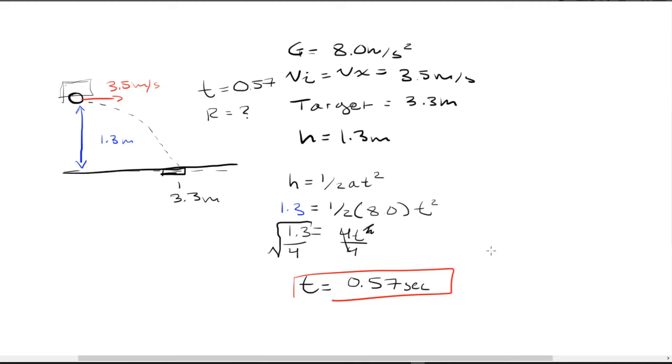And so now that we have our t figured out, we can box it up and write it in here. And now we can solve for the range. So the range, we're going to be using the vxt equation. We have the time and we have the velocity in the x, which is the velocity initial.